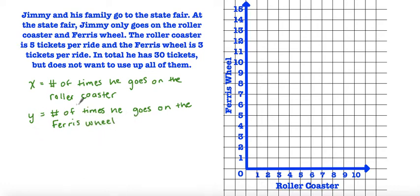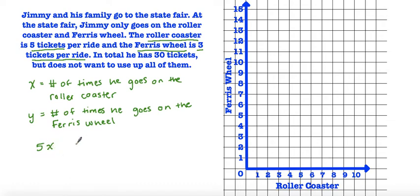We know that the roller coaster is 5 tickets per ride and the Ferris wheel is 3 tickets per ride. So if he goes on the roller coaster, that's going to be 5 tickets times the number of times he goes on the roller coaster. And if he goes on the Ferris wheel, it's going to be 3 tickets times the number of times he goes on the Ferris wheel. In total he has 30 tickets but does not want to use up all of them, so the number of tickets he uses on both rides is going to be less than 30.